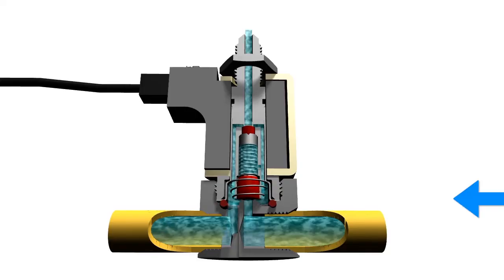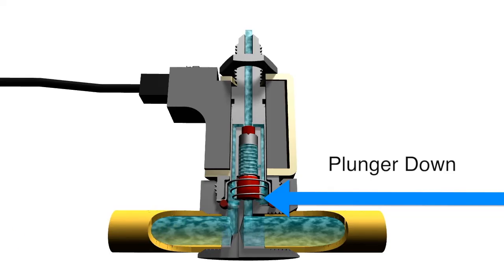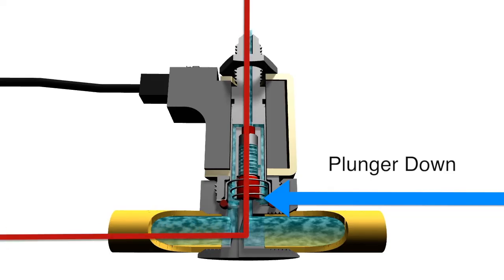When the plunger is down, it seals off the body orifice and opens up the stop orifice, directing flow through that port.